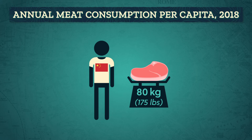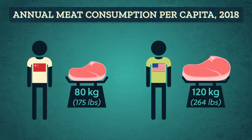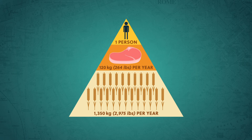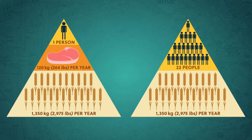Every person doesn't live their life exactly the same way, so we're going to use average numbers to discuss energy consumption here. In 2018, each person ate an average of just under 80 kilograms of meat in a year. And with 1.35 billion people in China, that's more than 108 billion kilograms of meat per year. Many other countries out-eat China per person — like an average American eats 120 kilograms of meat per year. That's like one person needing 1,350 kilos of grain a year to survive, because that's how much it takes to feed that amount of meat. But if we hopped down to a lower level on the food chain and ate grain instead of meat, those 1,350 kilos of grain could feed 22 people for a year.